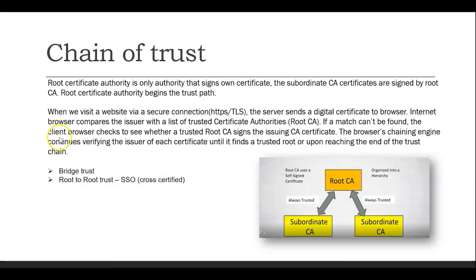A simple example: when we visit a website over HTTPS or TLS, the server sends its digital certificate to the browser containing its public key. The browser compares the issuer with its list of trusted root CAs. If a match is found, it's good; if not, the browser checks whether a trusted root CA signed an intermediate or subordinate CA, and the chaining engine continues verifying until it finds a trusted root CA. If no trusted root CA is found or the certificate is self-signed, the browser throws a warning saying the site is not secure.